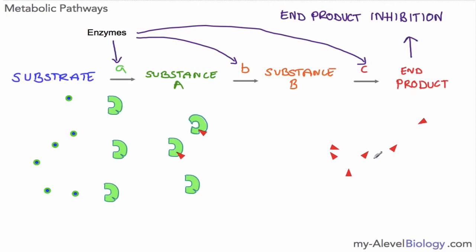Once we get less end product, there is less non-competitive inhibition of the enzyme, which means the enzyme can work more quickly again and the end product is produced at a faster rate. In the vast majority of cases, end product inhibition works via non-competitive inhibition — the product fits into a site other than the active site, changes the shape of the active site, and reduces the rate of the overall reaction. So that's an overview of competitive and non-competitive inhibition and a couple of applications of the idea. Thanks for watching and I'll see you soon.